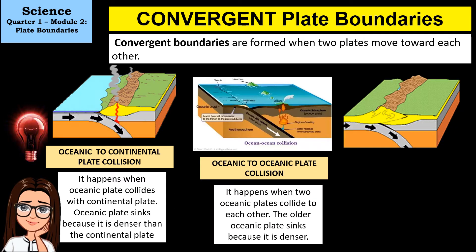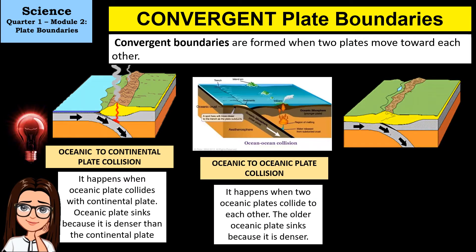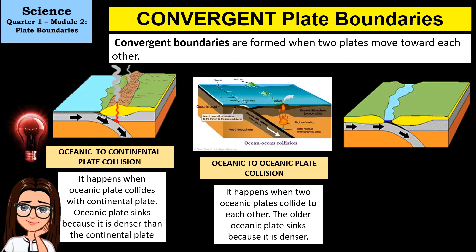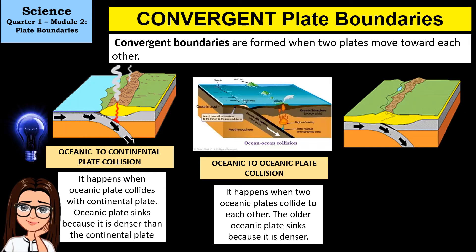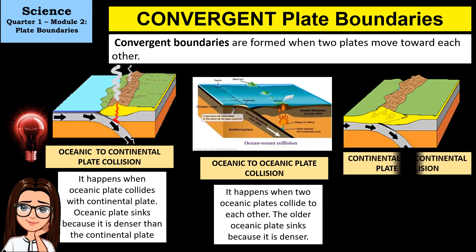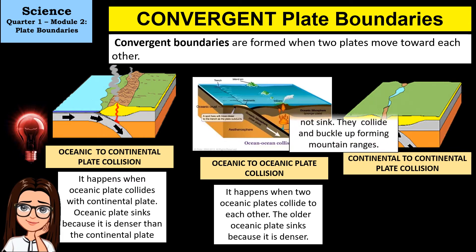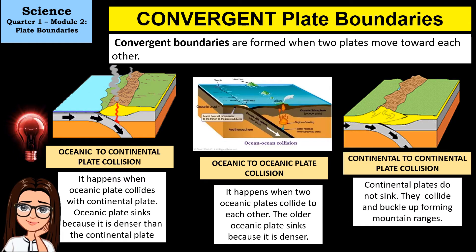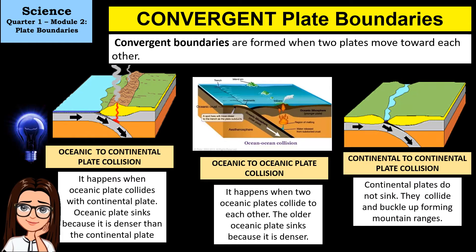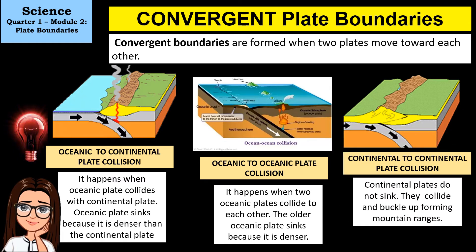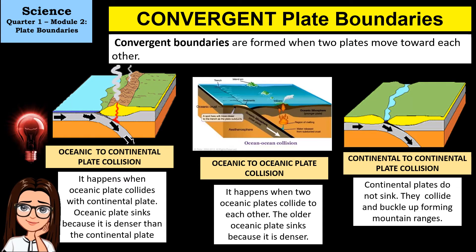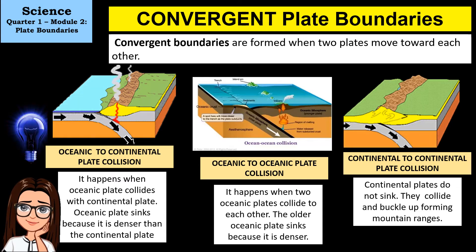The last type of convergent boundaries is the continental-to-continental plate collision. It happens when two continental plates collide. Continental plates do not sink; instead, they collide and buckle up, forming mountain ranges.